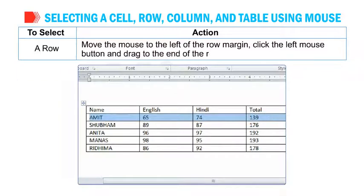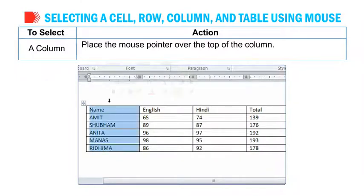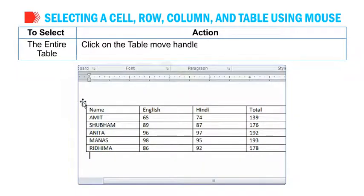Drag to the end of the row to select a column. Place the mouse pointer over the top of the column and click the left mouse button. To select the entire table, click on the table move handle or drag the mouse over the entire table.